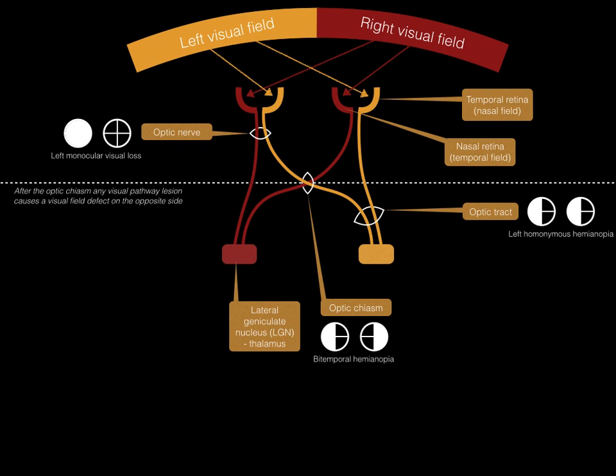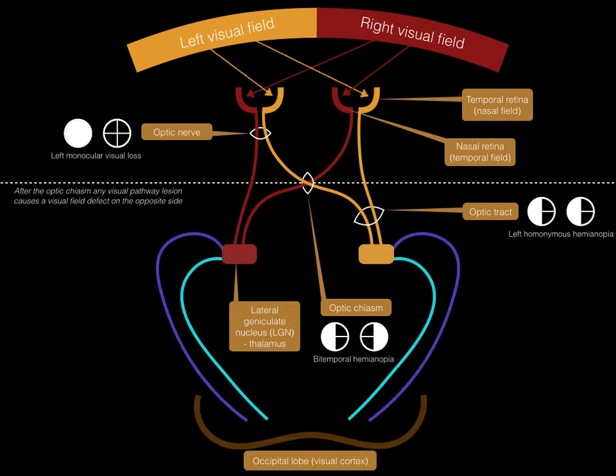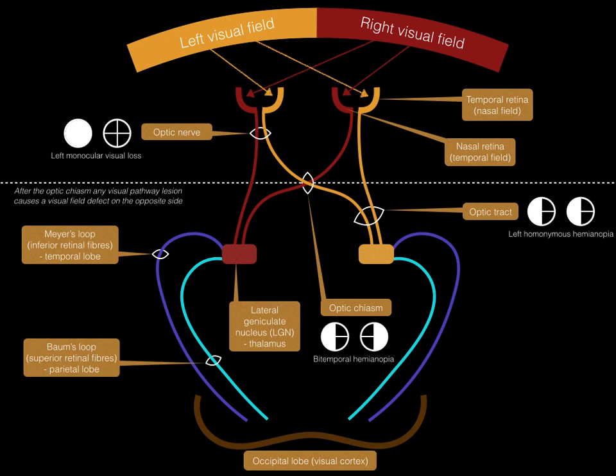From the LGN in the thalamus, the visual pathway continues to the visual cortex in the occipital lobe. The purple lines represent Meyer's loop, which carry information from the inferior retina of the same side of each eye. The light blue lines represent Baum's loop, which carry information from the superior retina of the same side of each eye.